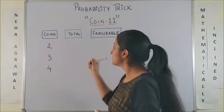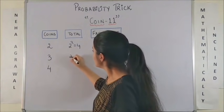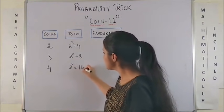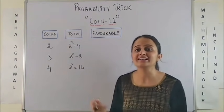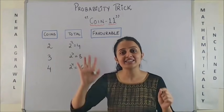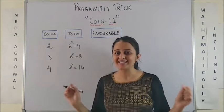We all know the total number of outcomes here are 2 square which is 4, 2 cube which is 8 and 2 raised to power 4 which is 16. But in this video we are going to discuss how can we get the favourable number of outcomes without actually writing your sample space. Yes, this is possible. Let the magic begin.